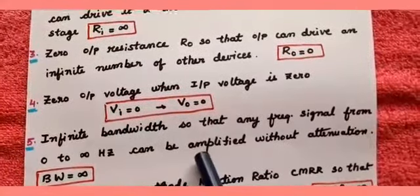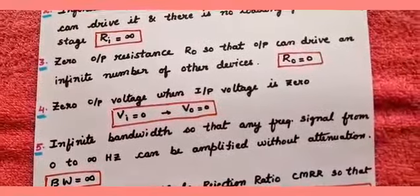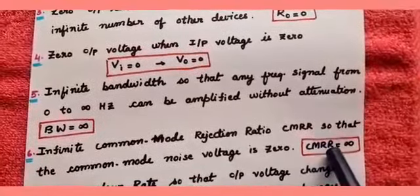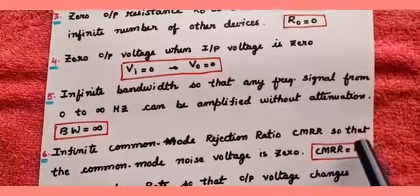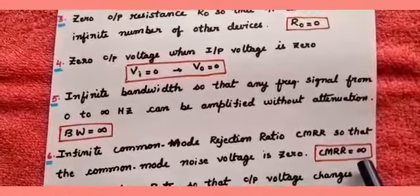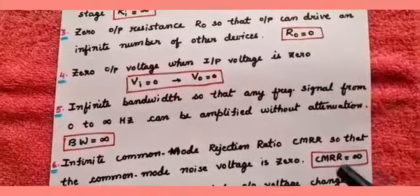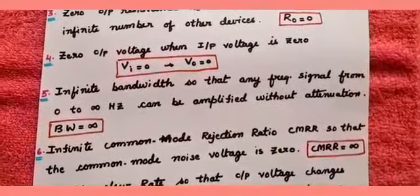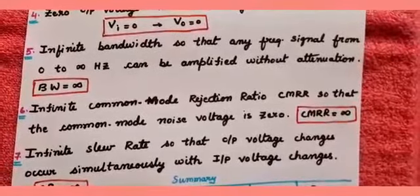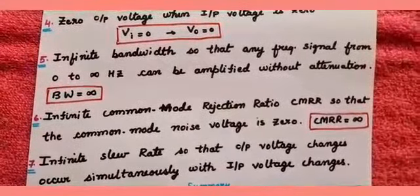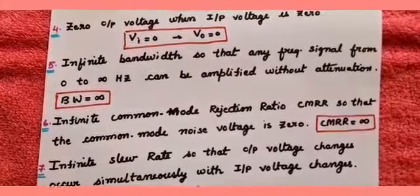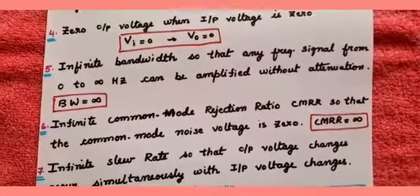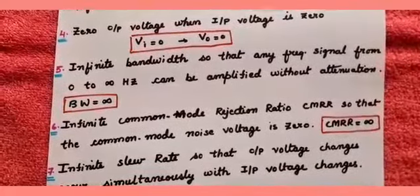The sixth characteristic is infinite common mode rejection ratio. CMRR equals infinity because ACM, the common mode gain, is 0, making CMRR equal to AD divided by ACM equal to infinity. This ensures that common mode noise voltage is zero. The seventh characteristic is infinite slew rate, so that output voltage changes occur simultaneously with input voltage changes — whenever there is a change in input voltage, a corresponding change occurs simultaneously at the output.